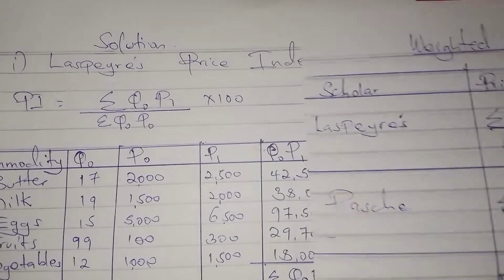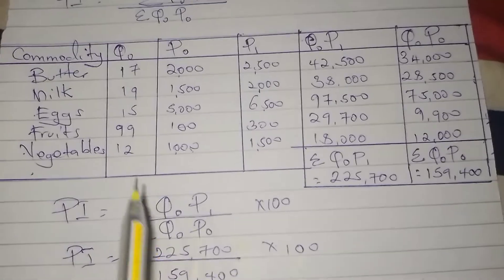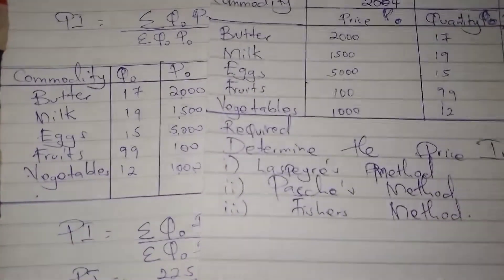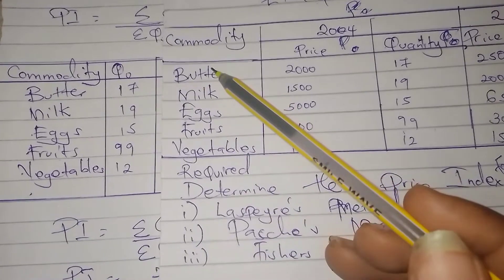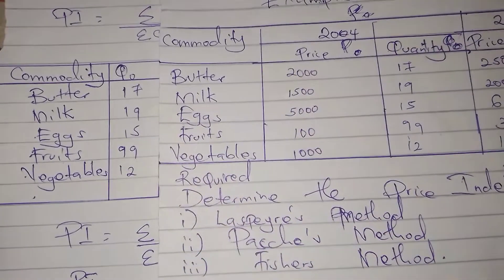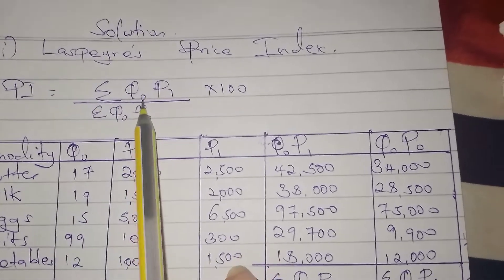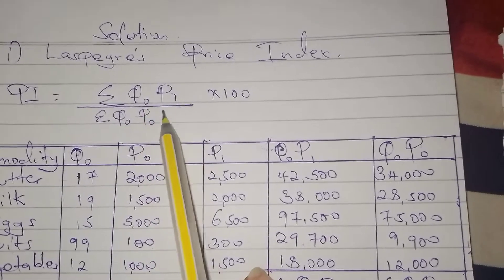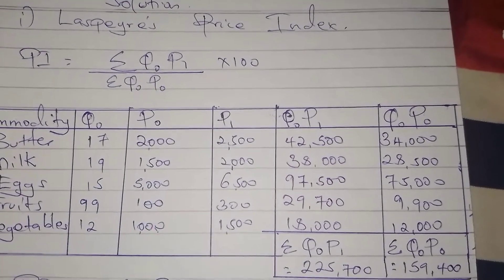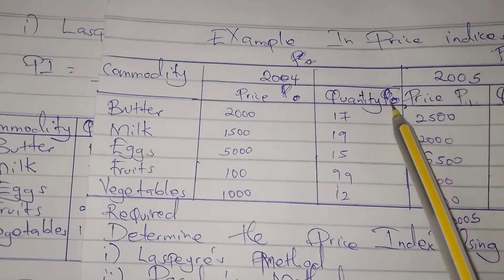We shall draw the table. The first column is for commodity, and we put the commodities as given in the question: butter, milk, eggs, fruits, vegetables. According to the Laspeyres method, we need q0, p1, and p0. We go to our question and look for these values. q0 is the quantity in the base year.